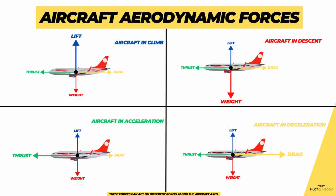As soon as you change these forces by moving your yoke or adjusting the throttle, you change the energy of your aircraft. If you pitch up, you're trying to increase lift. If lift increases and becomes bigger than weight, the aircraft starts to climb. The opposite is also true — if lift is decreased, weight will be bigger, so the aircraft will start to descend.